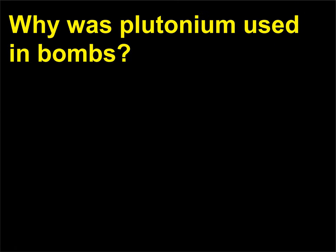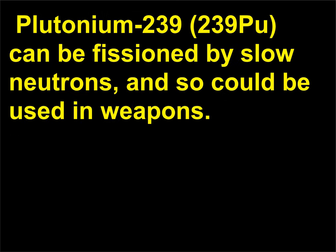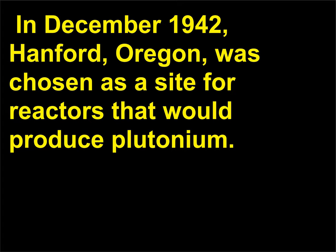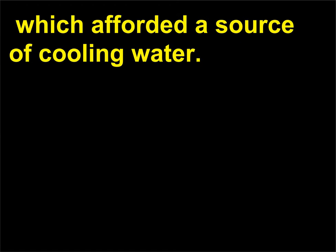Why was plutonium used in bombs? Plutonium is not found in nature, but it is produced in reactors by bombarding uranium-238 with neutrons. Plutonium-239 (²³⁹Pu) can be fissioned by slow neutrons, and so could be used in weapons. In December 1942, Hanford, Oregon was chosen as a site for reactors that would produce plutonium. Hanford was selected because it was isolated but also on the Columbia River, which afforded a source of cooling water.